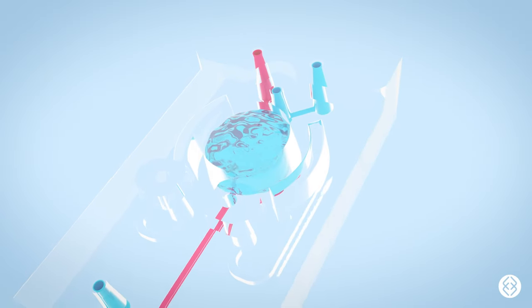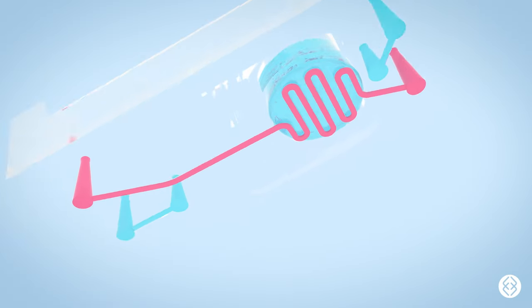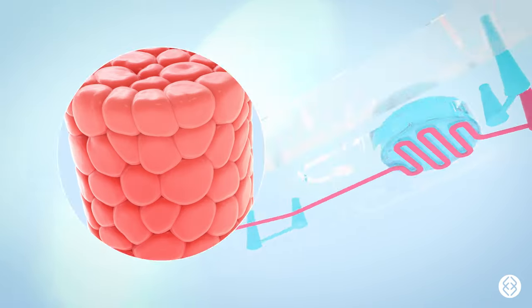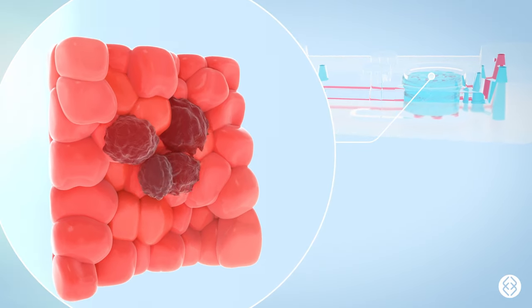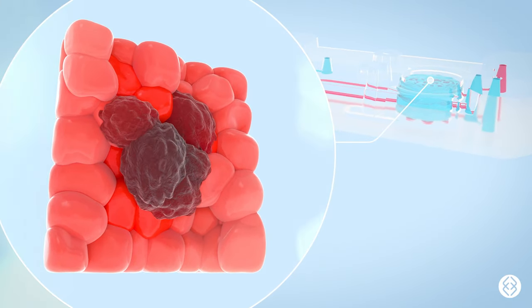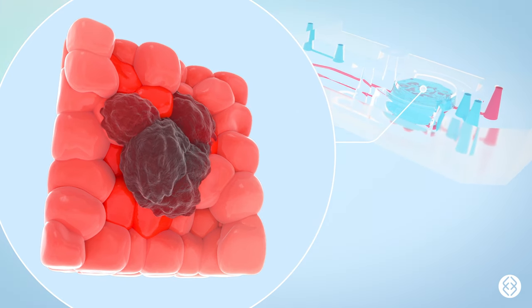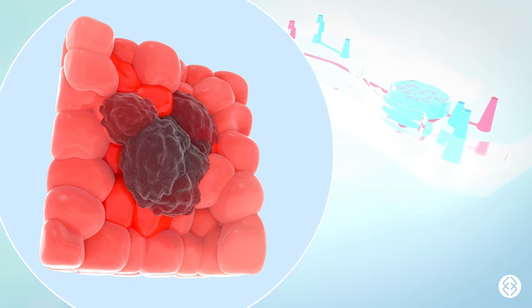These features make the Chip-A1 an ideal platform for modeling three-dimensional or stratified tissues such as the tumor microenvironment or skin epithelium. The hinged lid provides direct access to the epithelial tissue, enabling treatment with topical or aerosolized drugs.